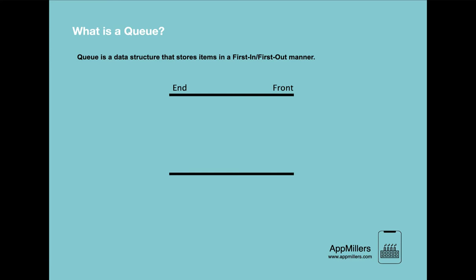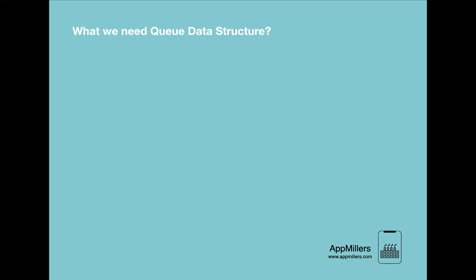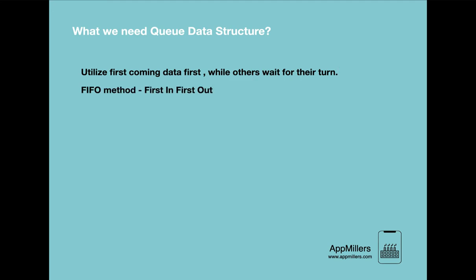Hopefully you have understood the concept of the queue. Now let's see why we need the queue data structure. In cases when you need to create an application that processes first-coming data first, we use the queue data structure. When we want to implement the FIFO method in our application, we use a queue. As the name suggests, a queue is used whenever we need to manage a group of objects where the first one in also gets out first while the others wait for their turn.